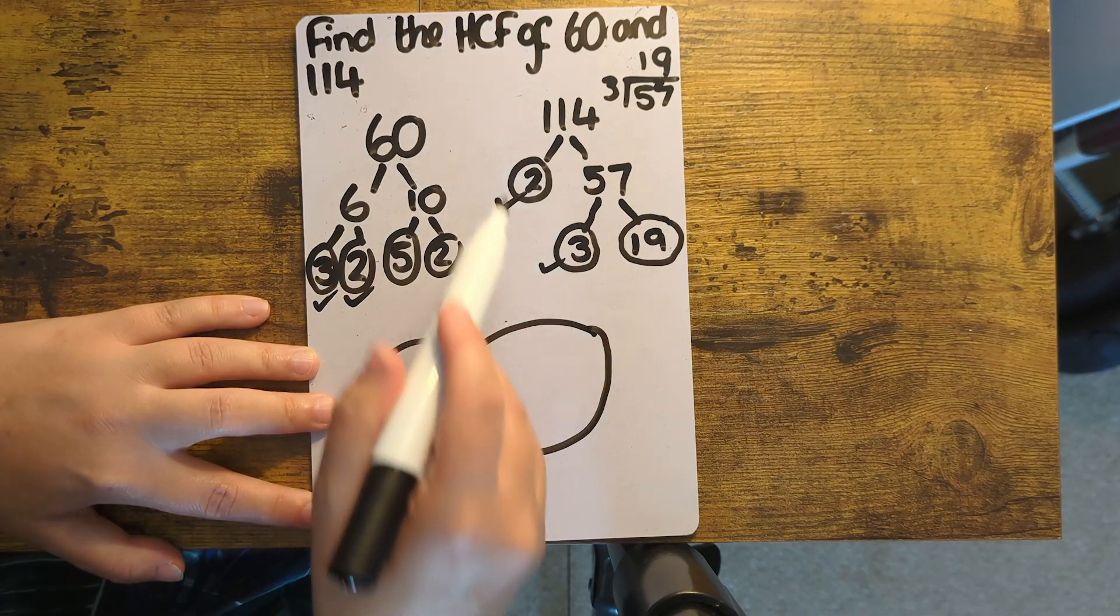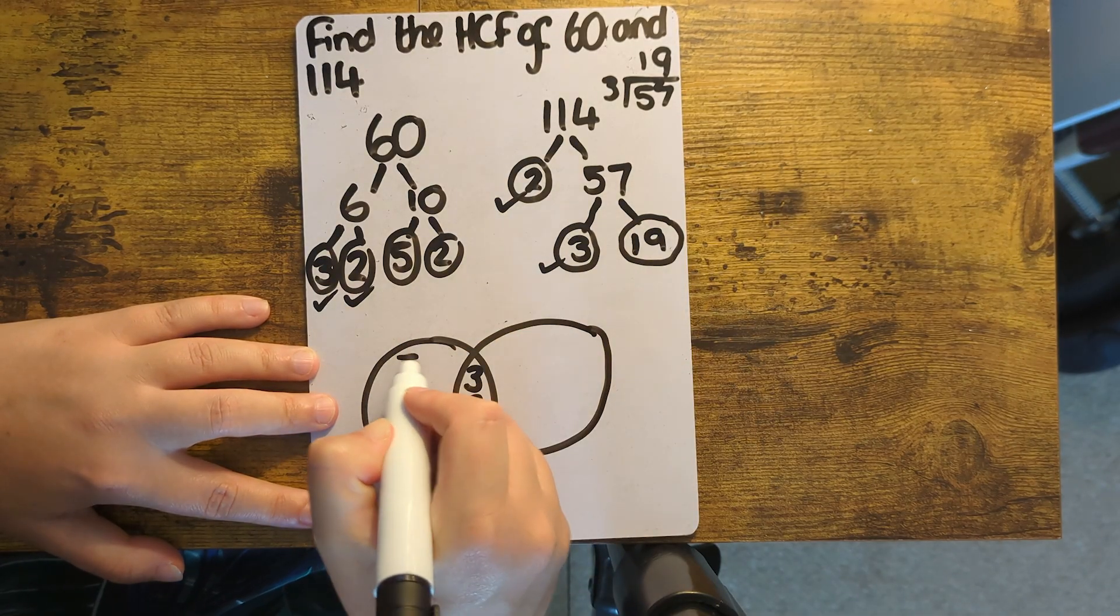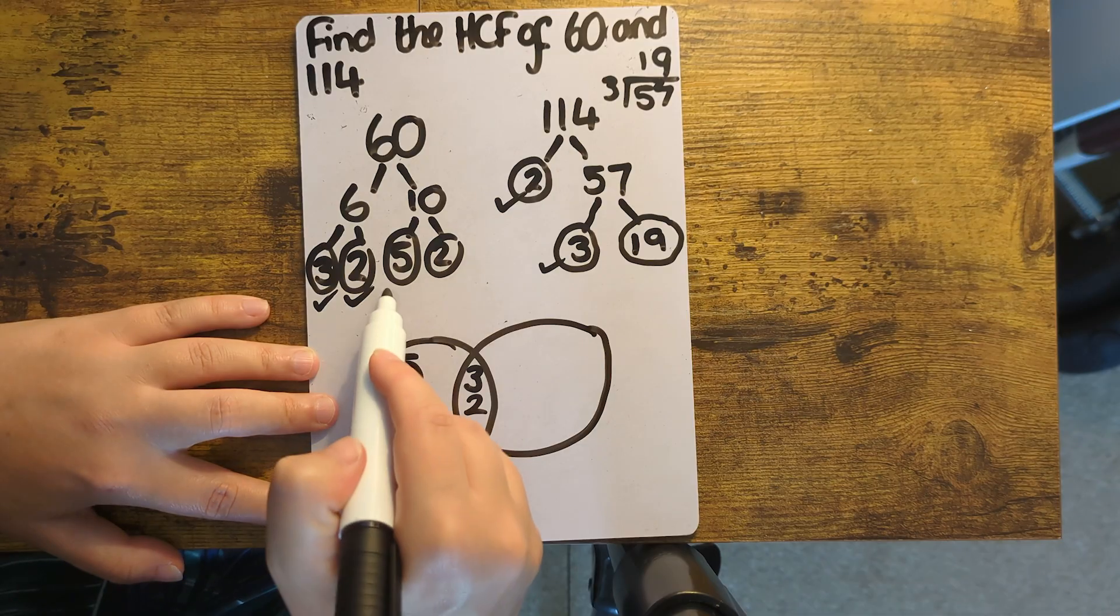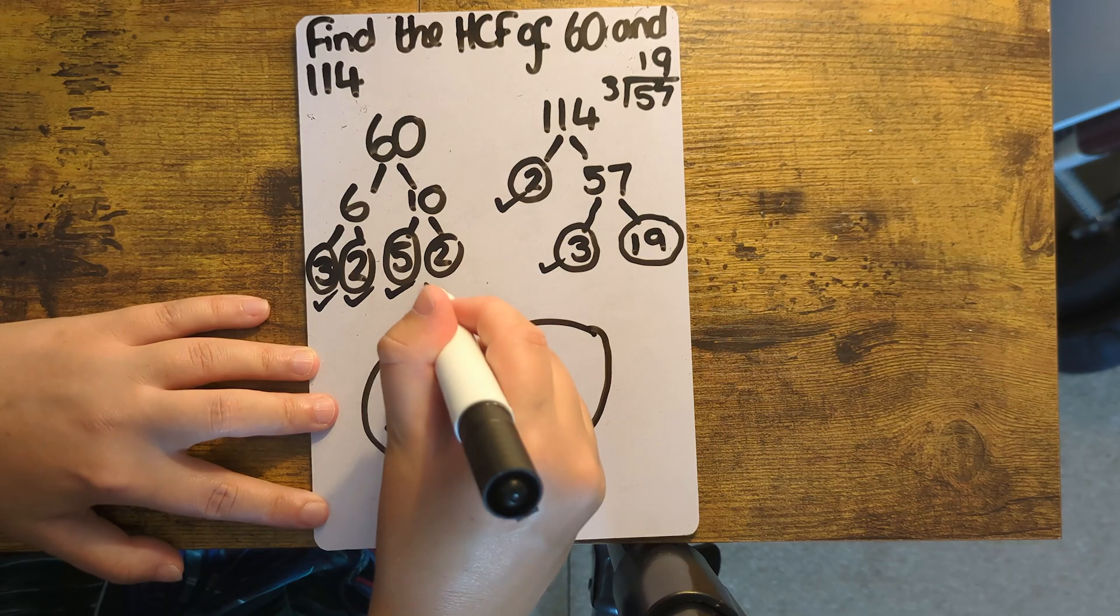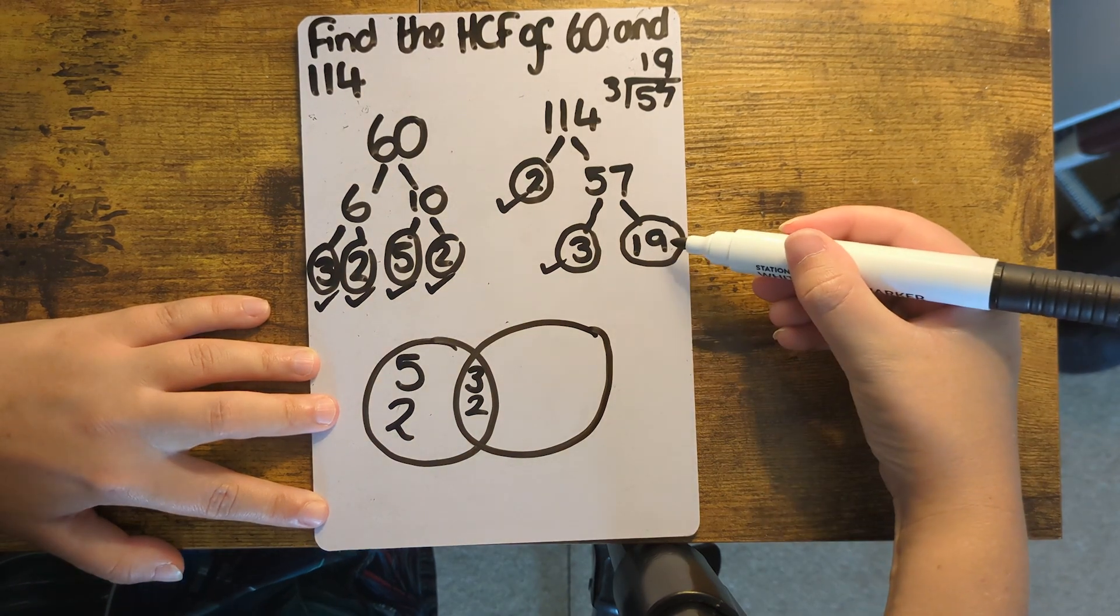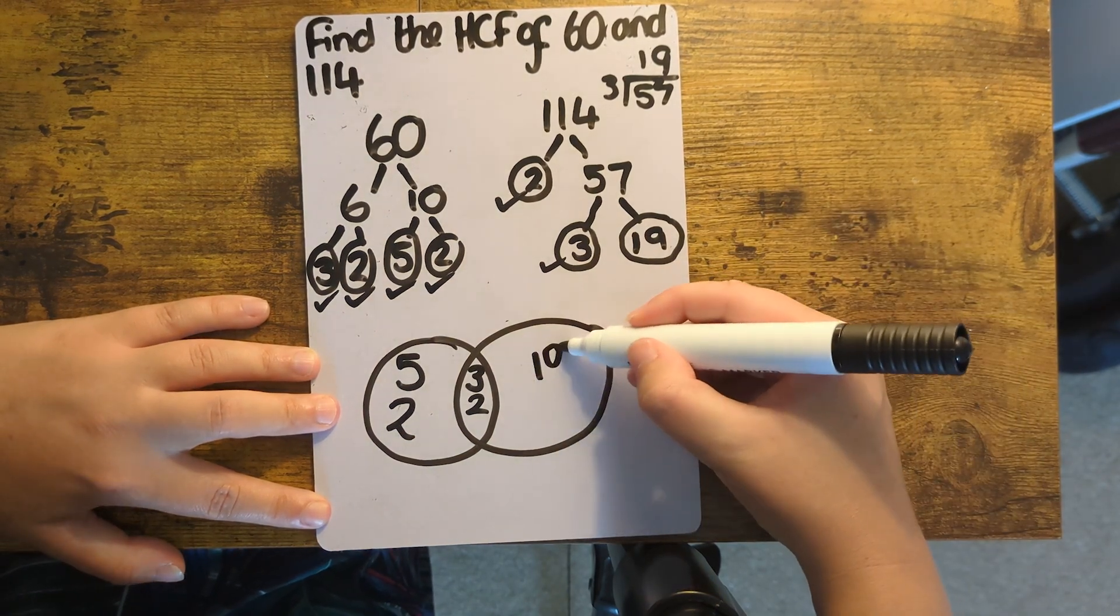This 5, there's no other 5s on the other tree, so that has to go on the left-hand side, as does this 2. And then this 19, there's not a 19 in the 60 factor tree, so that goes on the right-hand side.